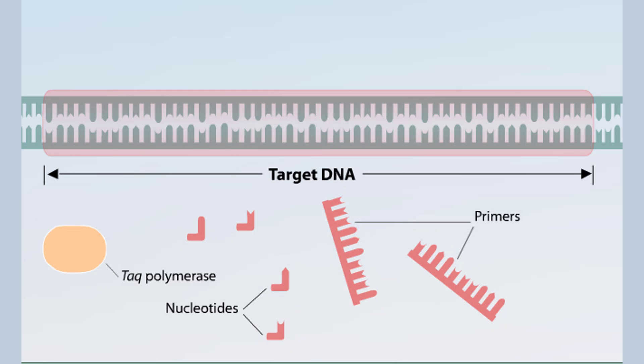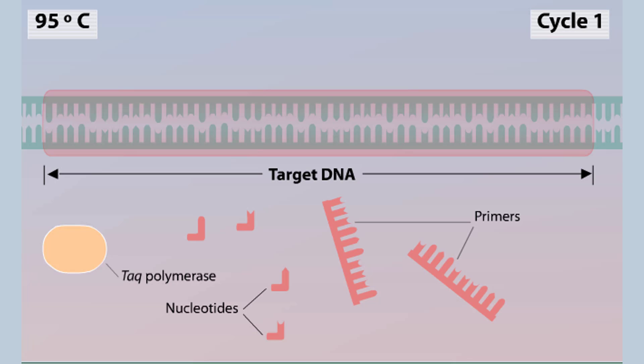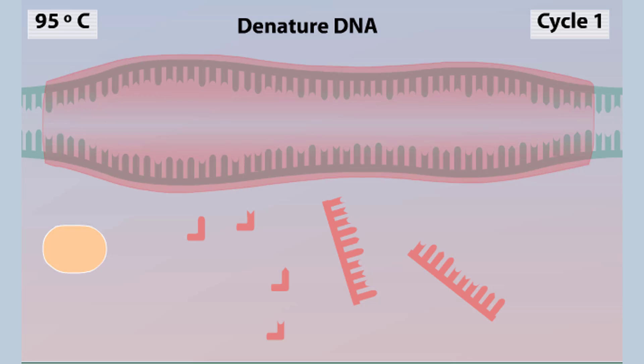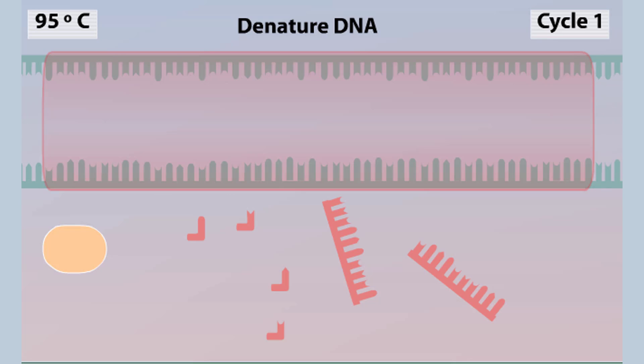A PCR reaction lasts several hours and typically consists of 20 to 35 repeating cycles. A cycle begins by heating the reaction mixture to 95 degrees Celsius. The heat denatures the DNA, breaking the hydrogen bonds that hold the strands together.